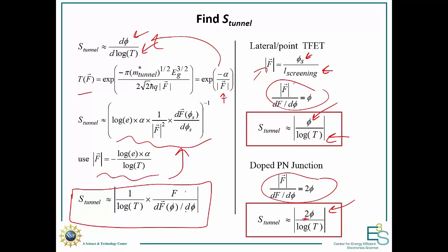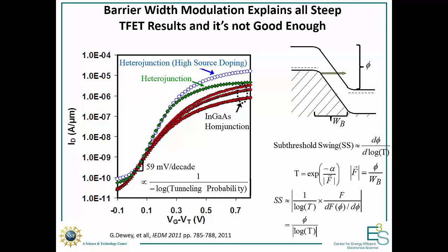This actually explains a lot of the best experimental T-FET results — and it's still not good enough. As your current gets higher, your tunneling probability approaches 1, meaning your steepness gets worse and starts to roll off. This is exactly what we see in experimental results: it's very steep at low current densities, around a nanoamp, where we see something around 60 mV/decade. But once you get to higher, more interesting current densities, the steepness rolls off. Unfortunately, we're only steep at a nanoamp per micron, and we wanted a milliamp per micron — we're off by six orders of magnitude.